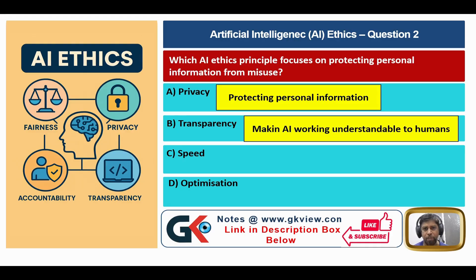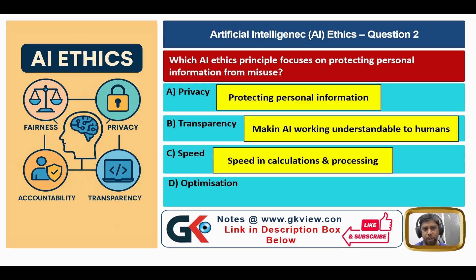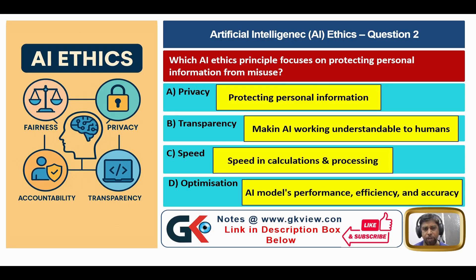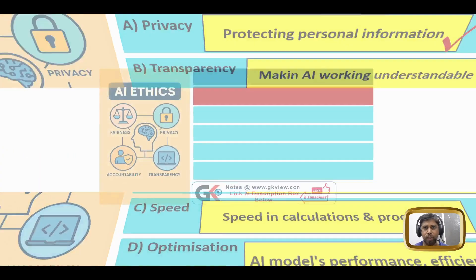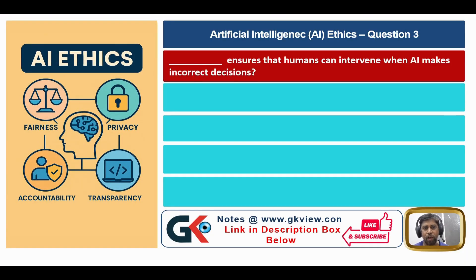Option B, transparency, means making AI working understandable to humans. Option C, speed, refers to speed in calculations and processing. Option D, optimization, means AI model performance efficiency and accuracy. Since the question asks about protecting personal information, the answer is option A — privacy.